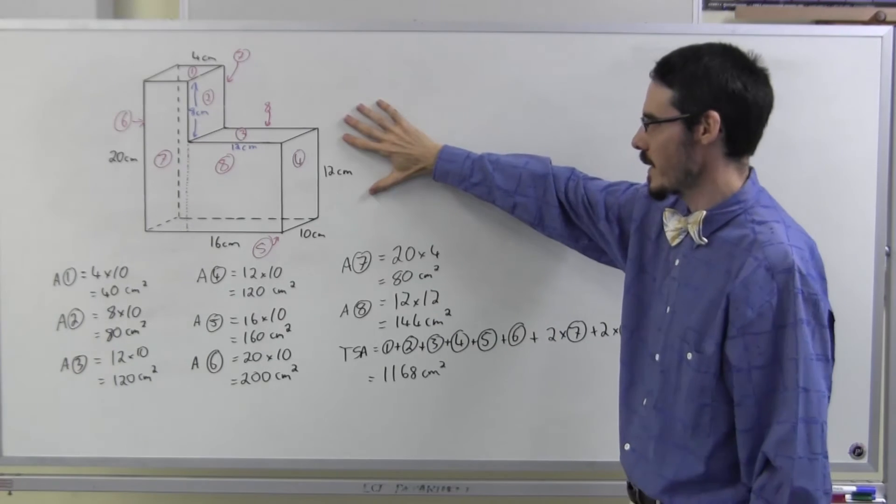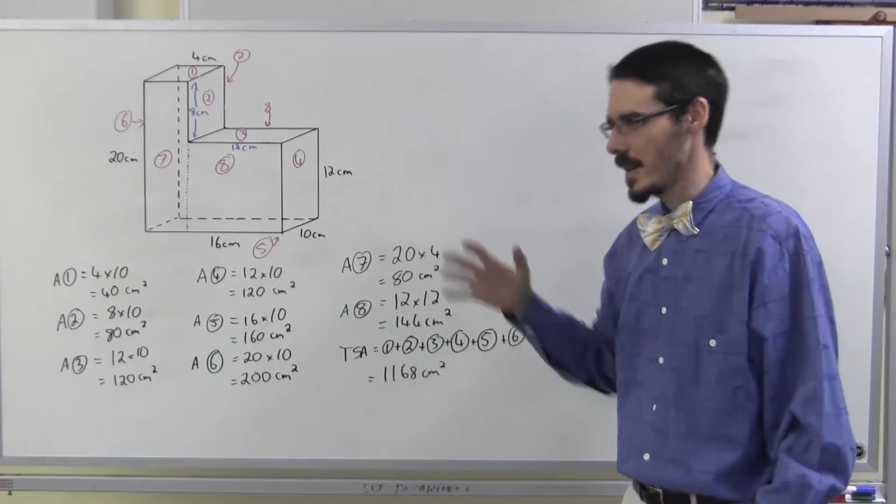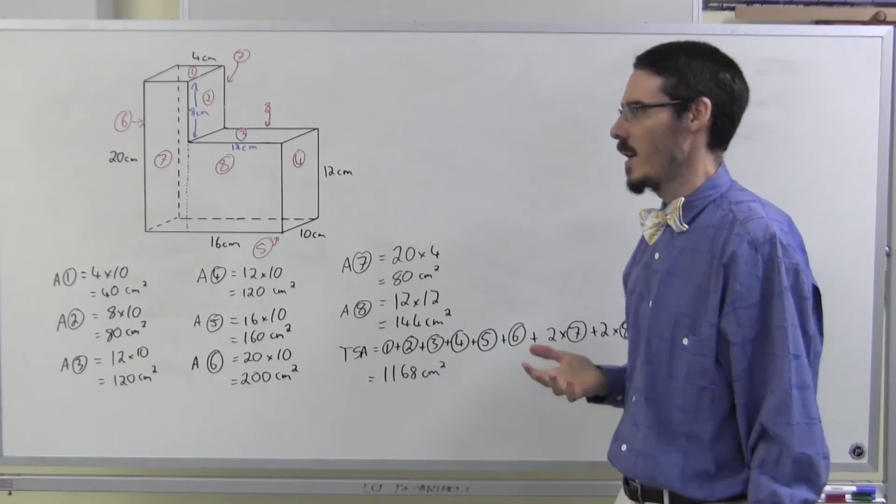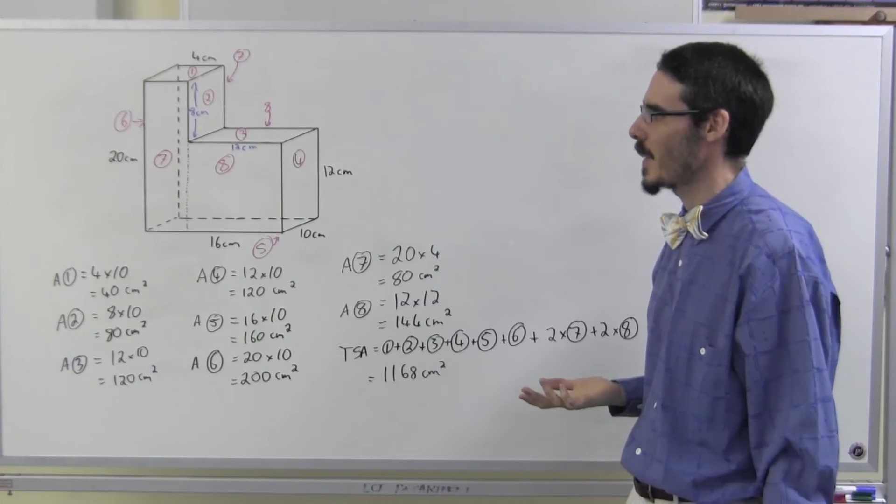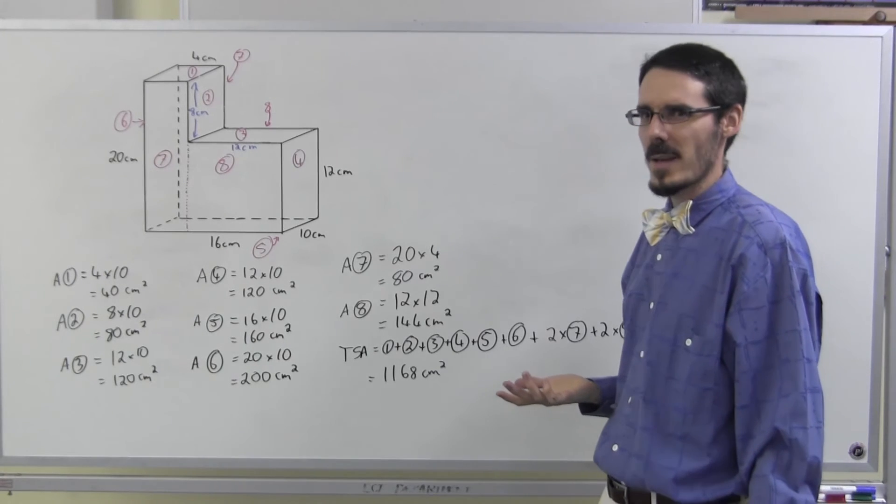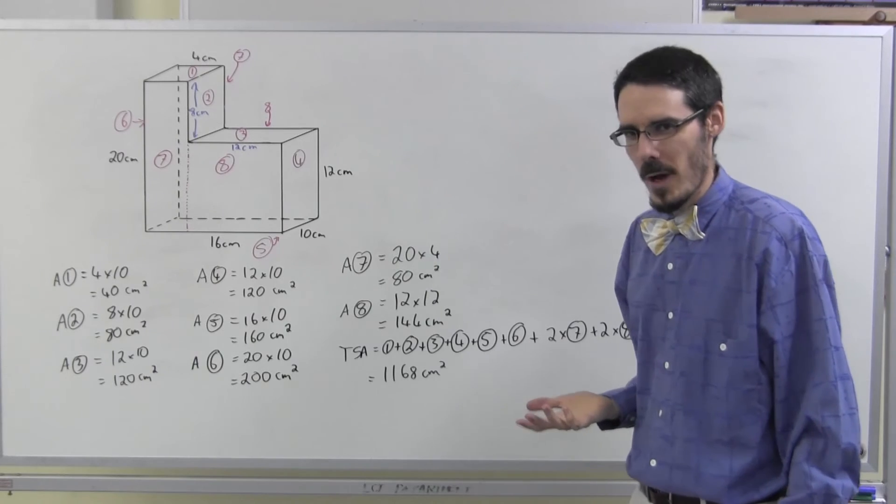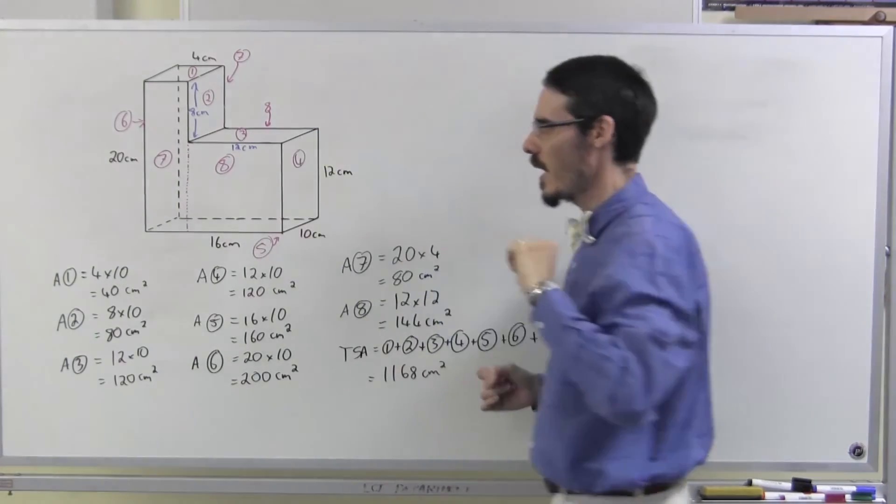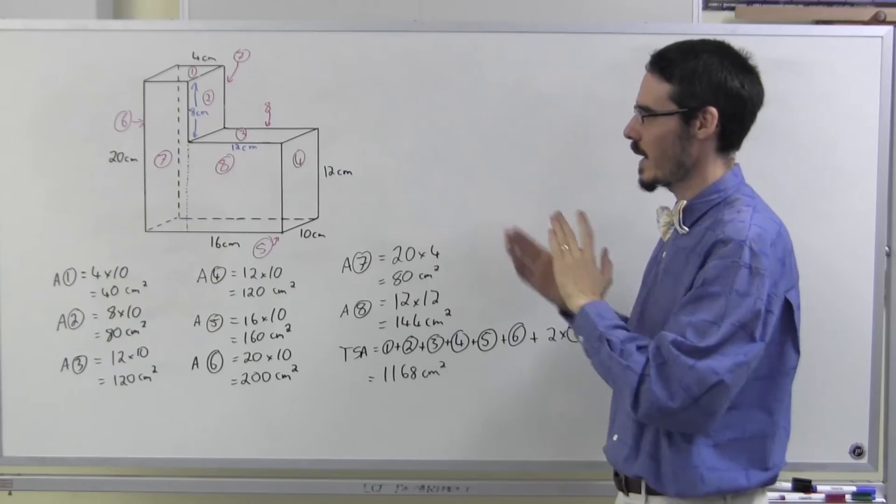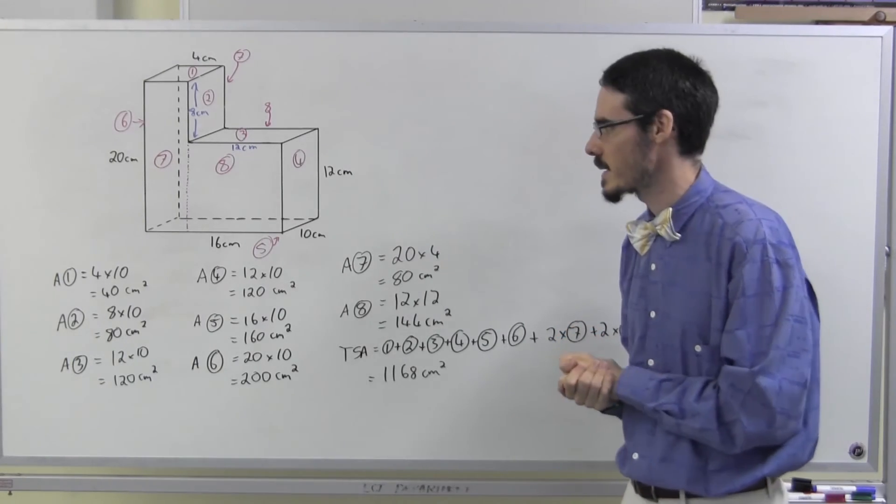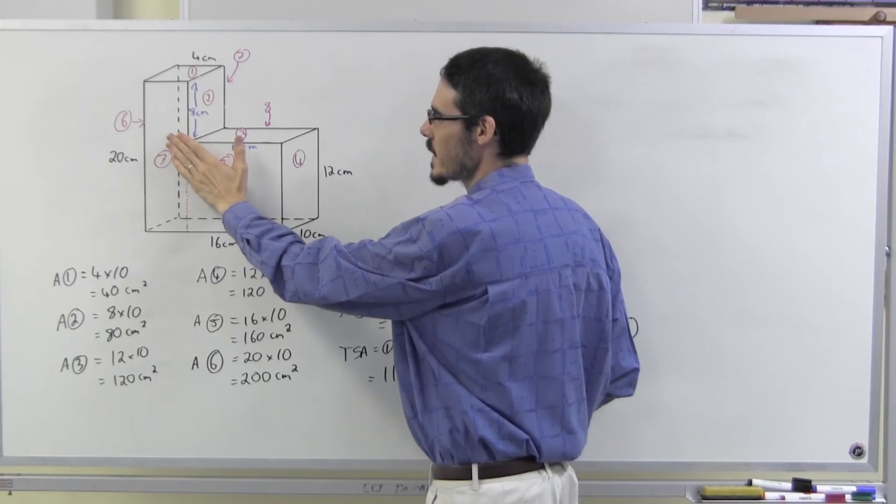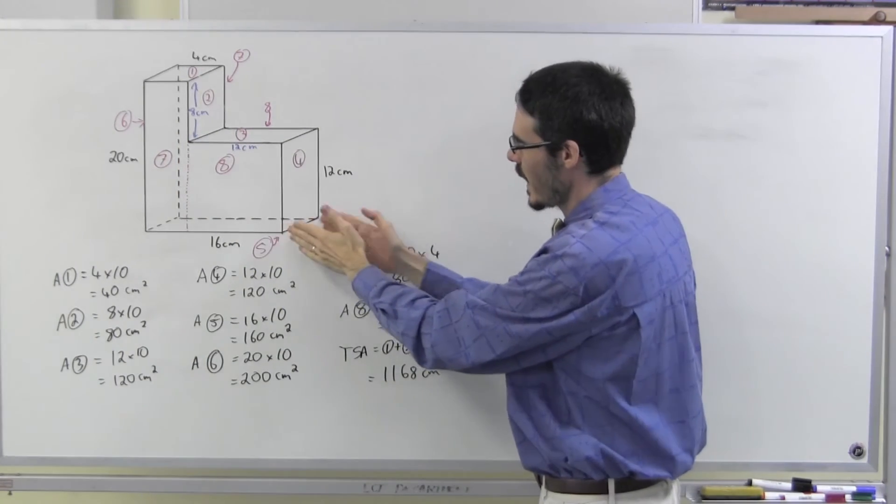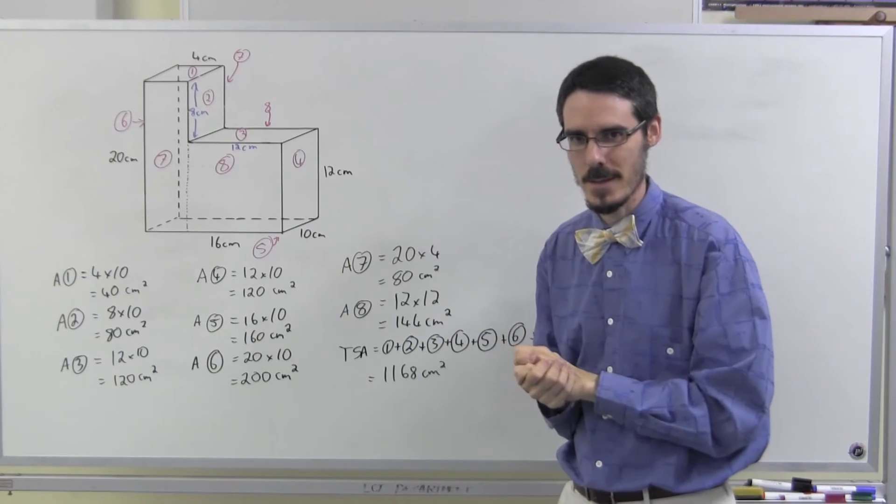Now, if I have to calculate the volume of this shape, I need to ask myself, is it a prism or is it a pyramid? Well, it's clearly not a pyramid. There's no apex. But is it a prism? Is there one face which, if I take cross sections parallel to that face, I'll get the same shape all the way through the solid? Yes, there is. This front face is the base of the prism, which means this depth here, 10, is the height of the prism.